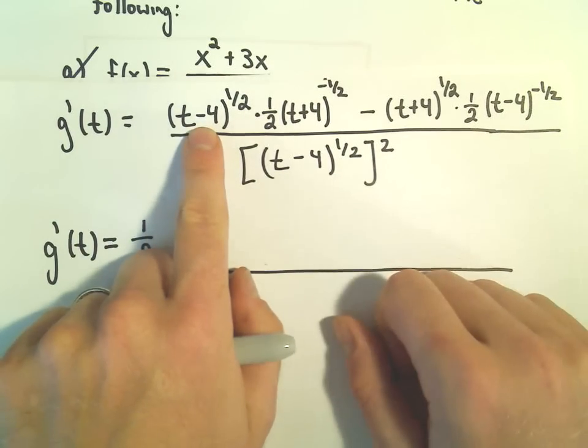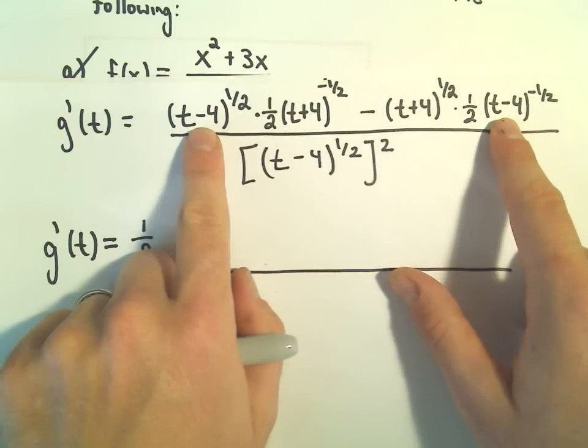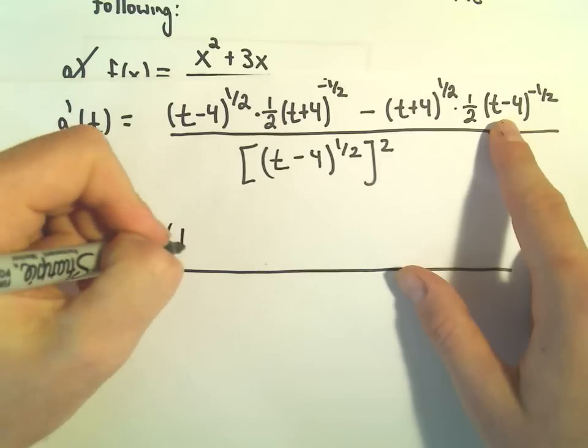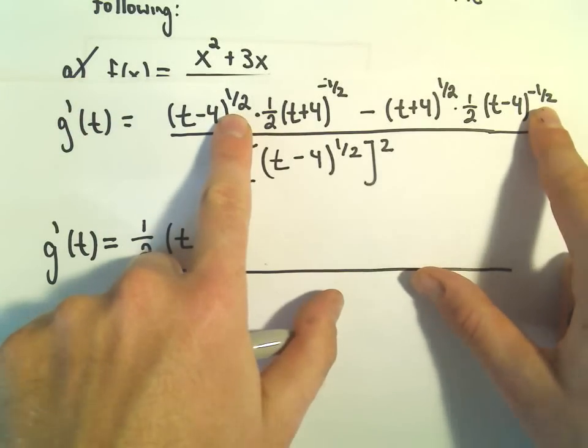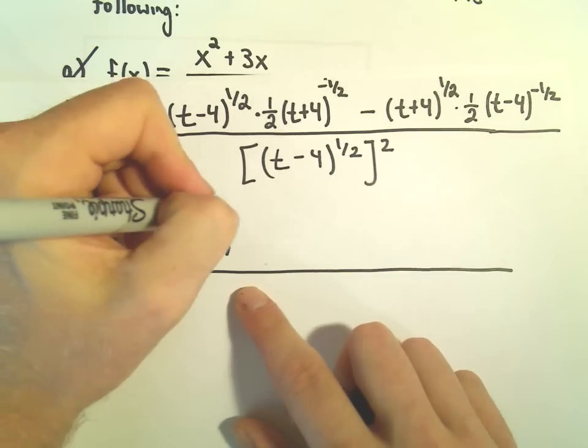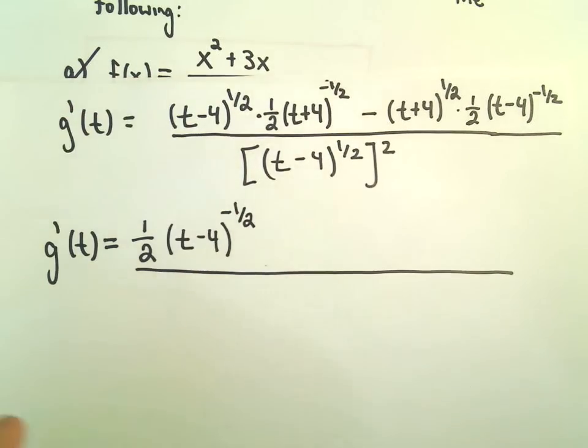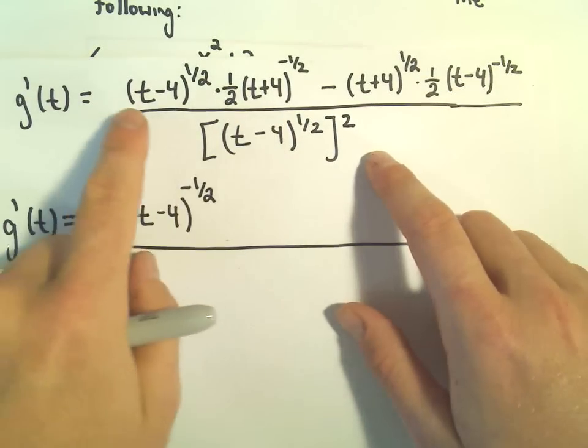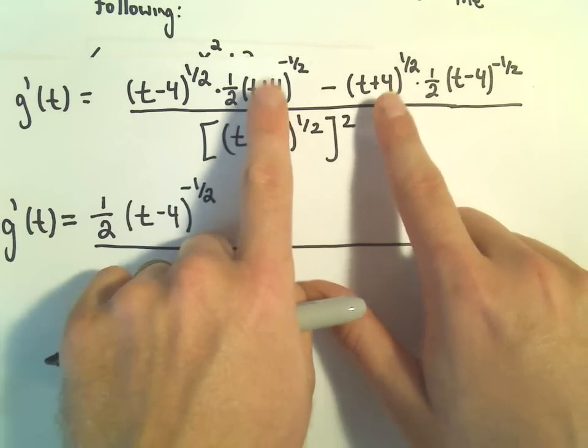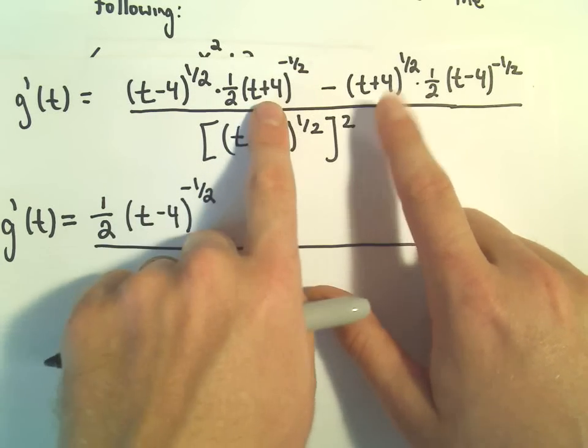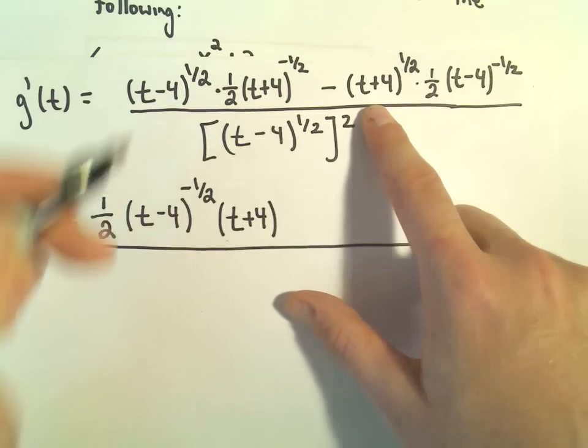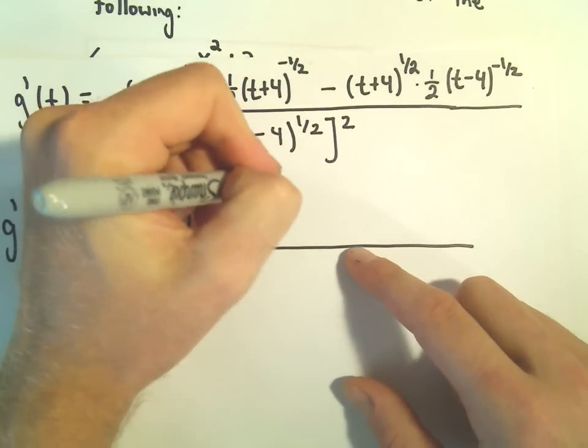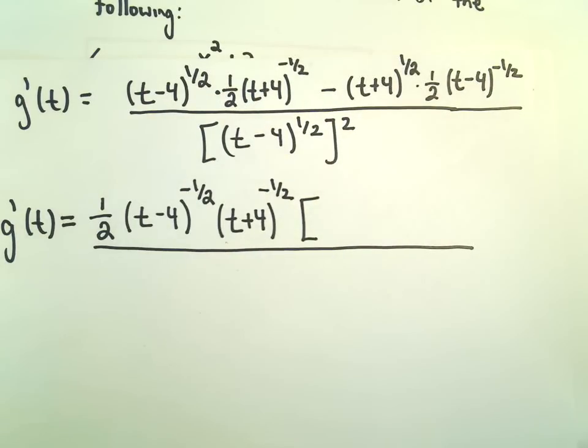I see things are being multiplied by a 1 half in both terms, so we can factor the 1 half out. And then I have a t minus 4 in parentheses and also a t plus 4 in parentheses. So I can factor out a t minus 4. Now the question is to what exponent? Well, I've got a positive 1 half and a negative 1 half. I'm going to factor out the negative 1 half. Then I do the same thing. I've got a t plus 4 to the negative 1 half and a t plus 4 to the 1 half. I'm going to factor out the negative 1 half.